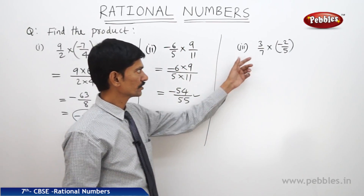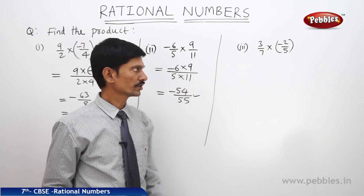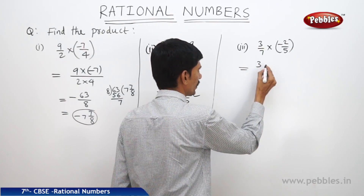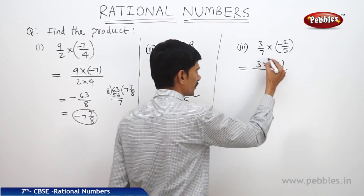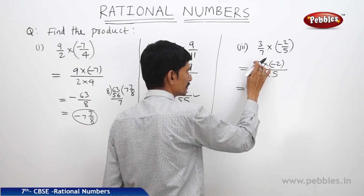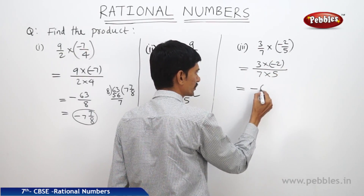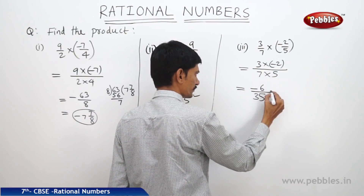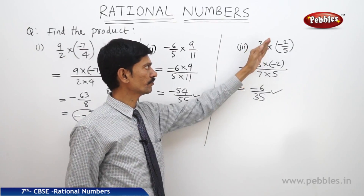Next question: 3 by 7 multiplied by minus 2 by 5. We find the product of the numerators as 3 into minus 2 divided by the product of the denominators 7 into 5. This equals minus 6 divided by 35, since plus into minus is minus and 3 twos are 6, and 7 fives are 35. This is the product of 3 by 7 and minus 2 by 5.